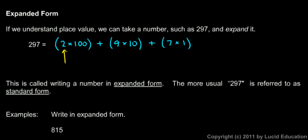So we indicate how many hundreds we have, how many tens we have, and how many ones we have. And 297, you can see, is equal to 2 times 100 plus 9 times 10 plus 7 times 1.